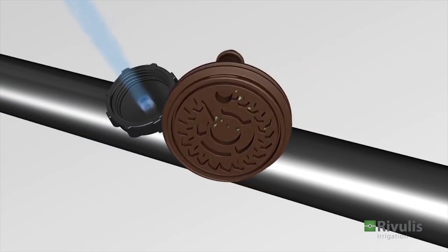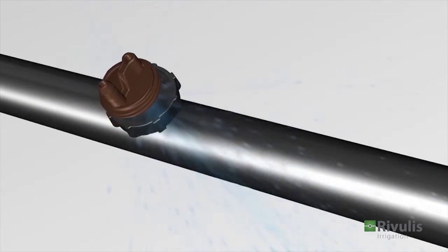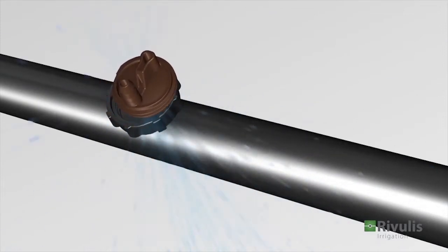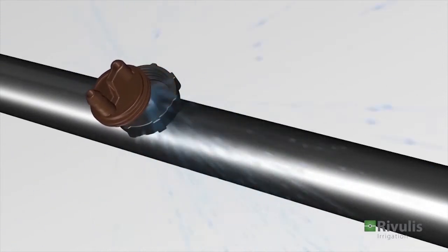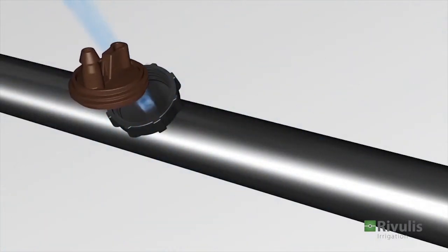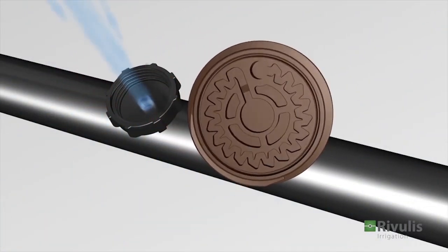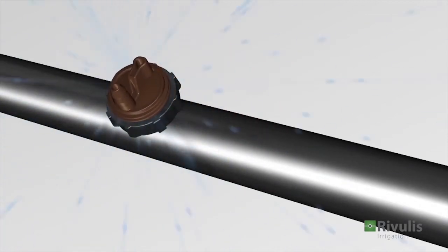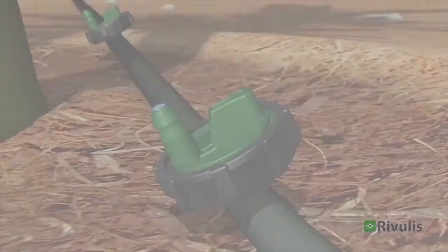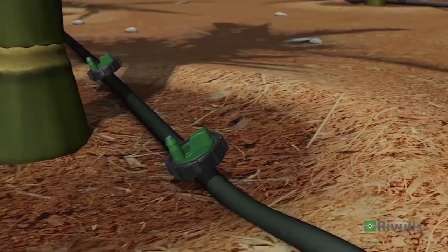It only takes seconds to clean the labyrinth. Once it is clear of dirt particles, the cap is screwed back on and the dripper is back to its normal operation. e1000 is used in a variety of applications.